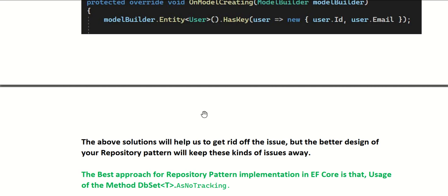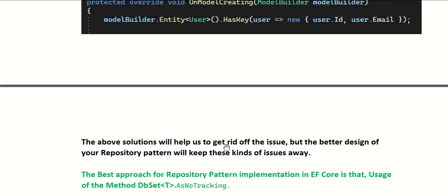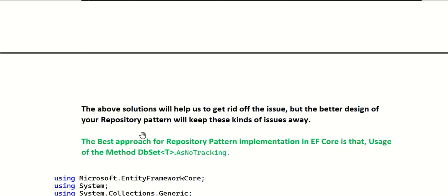The above solutions will help get rid of the issue, but a better design using the repository pattern will keep these kinds of issues away. We may be using different approaches while manipulating EF Core entities or handling DML operations like update, insert, and delete using the DbContext object. You should design your repository pattern to avoid these issues. Microsoft provides a good API method for DbContext called AsNoTracking.